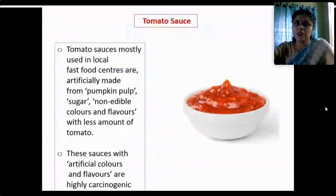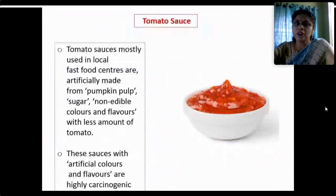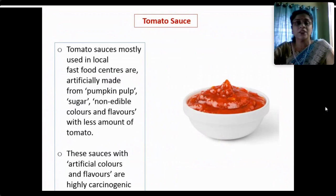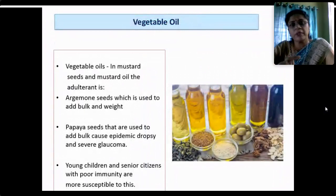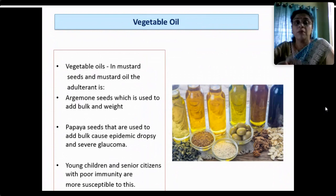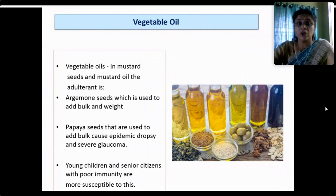Food grains such as rice and wheat — the staple food of our country — are adulterated with starch, stones and grits to increase overall weight for higher sale profits. Tomato sauce, stored in households and used in local fast food centers, is artificially made from pumpkin pulp, sugar, non-edible colors and flavors, with only small amounts of actual tomato. Vegetable oils like mustard oil are adulterated with argemone seeds and papaya seeds to add bulk and weight — and these are especially hazardous for young children and senior citizens with poor immunity.